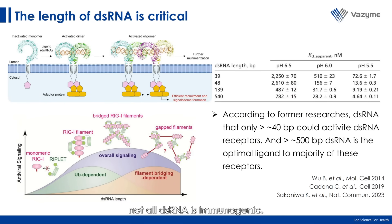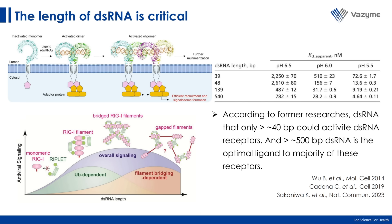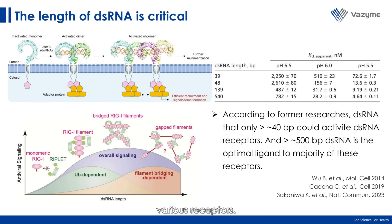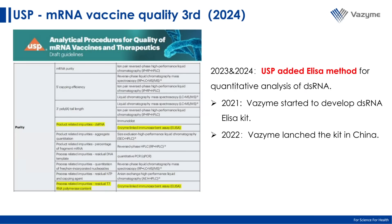It is important to highlight that not all dsRNA is immunogenic — the length of dsRNA significantly affects its immunogenicity. For example, dsRNA longer than 40 bp is necessary to trigger immune responses, while dsRNA longer than 500 bp can fully activate various receptors, creating a stronger inflammatory signal.